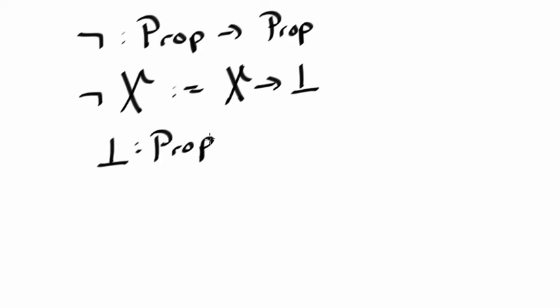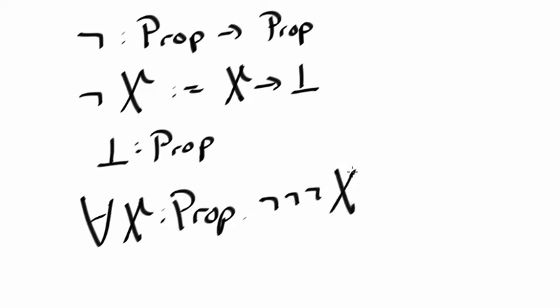Now what do we want to prove? We want to prove for all X, proposition not not not X implies not X. So if you know the triple negation of X, then you know the single negation of X.